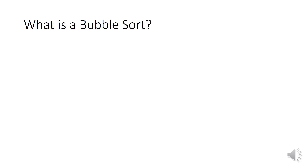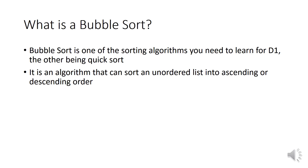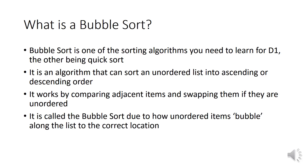What is a bubble sort? Bubble sort is one of the many sorting algorithms out there, and it's one of the only two that you need to learn for D1, the other one being quicksort which I'll go over in another video. It is an algorithm that can sort an unordered list into ascending or descending order. It works by comparing adjacent items and swapping them if they are unordered. It's called the bubble sort due to how all the unordered items sort of bubble from one end to the other to get from the original location to the correct location of the sorted list.